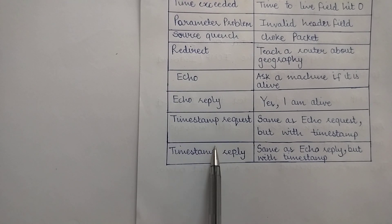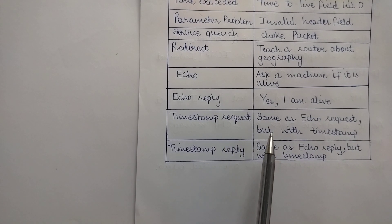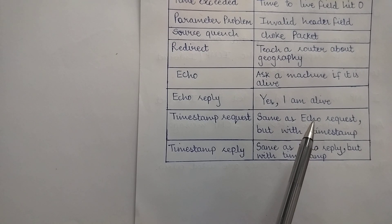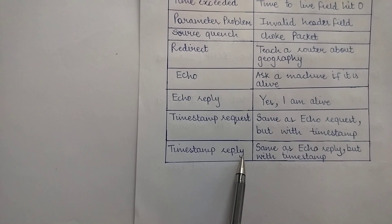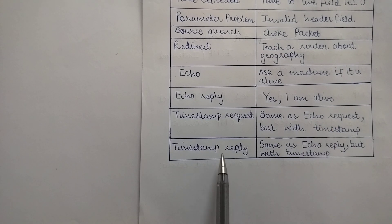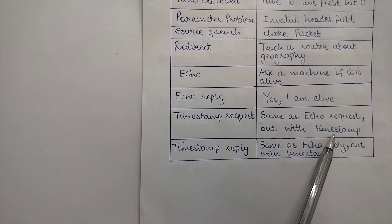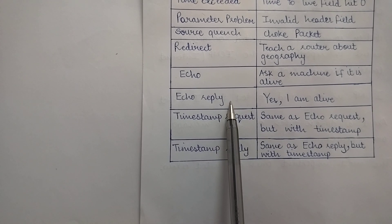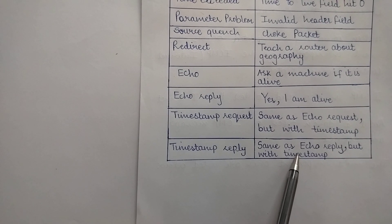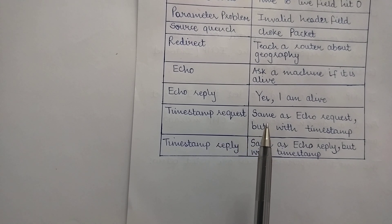The final messages are 'Timestamp Request' and 'Timestamp Reply.' These are similar to echo and echo reply, except that the arrival time of the message and the departure time of the reply are recorded. The timestamp request is essentially an echo request with a timestamp attached, and the timestamp reply is an echo reply with a timestamp attached. This facility is used to measure network performance using the Internet Control Message Protocol.